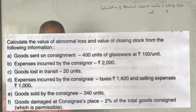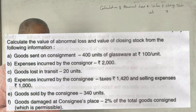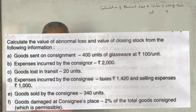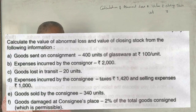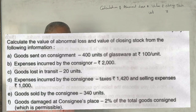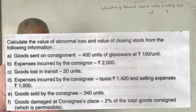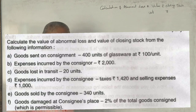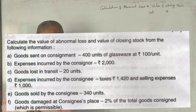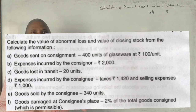Calculate the value of abnormal loss and value of closing stock from the following information. Goods sent on consignment: 400 units of glassware at ₹100 per unit. Expenses incurred by consignor: ₹2,000. Goods lost in transit: 20 units. Expenses incurred by the consignee — taxes ₹1,420 and selling expenses ₹1,000. Goods sold by consignee: 340. Goods damaged at consignee's place is 2% of the total goods consigned, which is permissible.